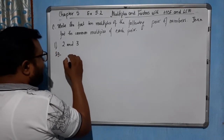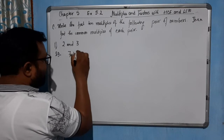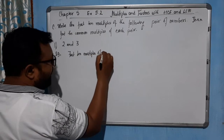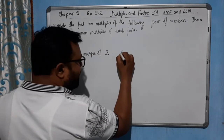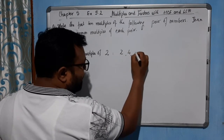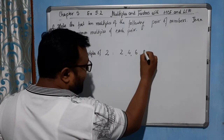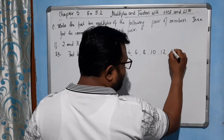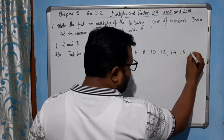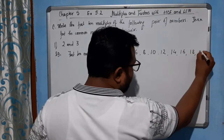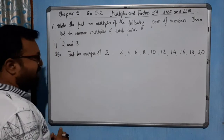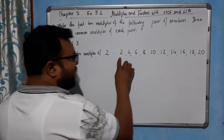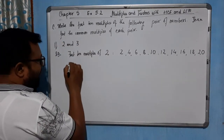Solution. First, the first 10 multiples of 2. So: 2×1=2, 2×2=4, 2×3=6, 2×4=8, 2×5=10, 2×6=12, 2×7=14, 2×8=16, 2×9=18, 2×10=20. After multiplying with 1 through 10 you will get these — these are the multiples of 2.